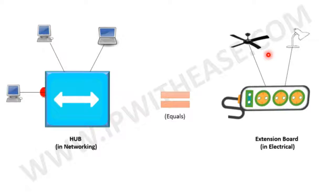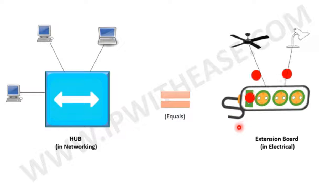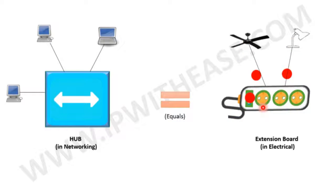A hub copies the signal from one port and sends it across all the ports. In the same manner, an extension board sends the received current to all the ports.